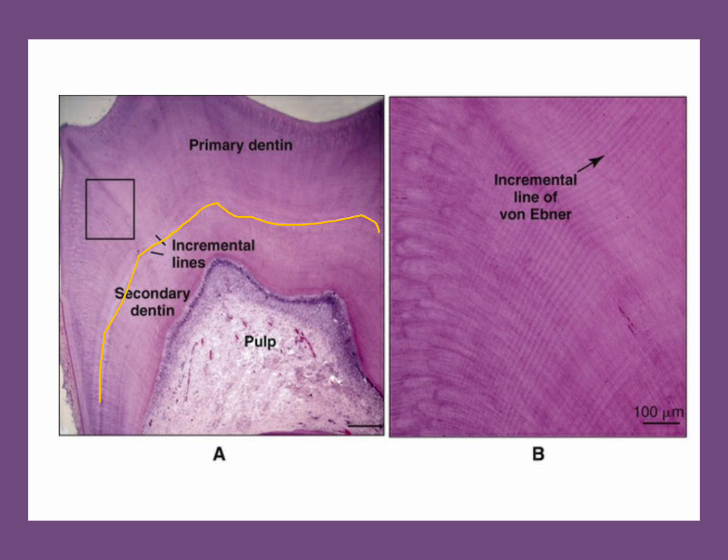At low magnification you can see incremental lines running perpendicularly on the tubules. In some slides these are labeled as von Ebner lines, but they are actually called Anderson lines. When von Ebner described these lines, he didn't specify which lines he was referring to, so some books describe Anderson lines as von Ebner lines. Remember: at low magnification in a light microscope you cannot see von Ebner lines or cross striations — the incremental lines visible at low magnification are either enamel striae in enamel or Anderson lines in dentine.